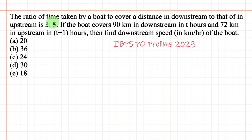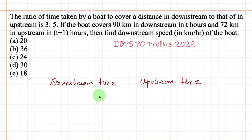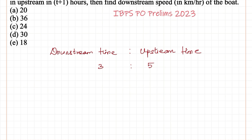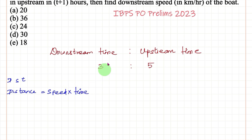First, from the first sentence, the ratio of time taken by the boat: downstream time to upstream time is in the ratio of 3 to 5. The formula we use is DST — distance equals speed into time — so time equals distance divided by speed.